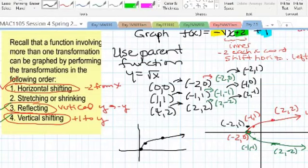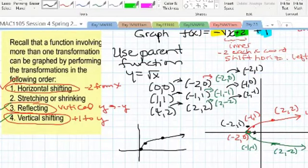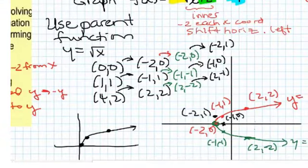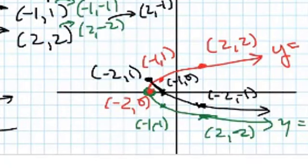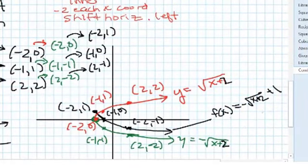Shifting up 1 from (-1, -1) puts us at (-1, 0), and (-2, -2) moves up to (-2, -1). This is the same as the previous graph but shifted up 1 unit, so it still has the same shape. The graph in black is our final graph — f of x equals negative square root of x plus 2, plus 1 — and we've completed all three transformations.